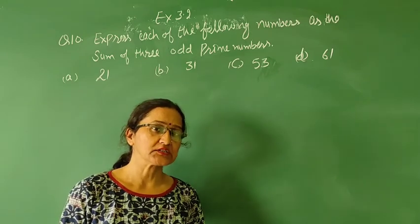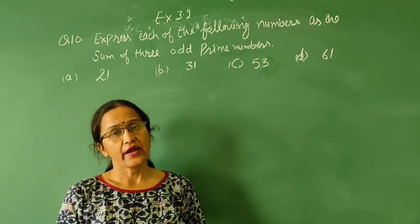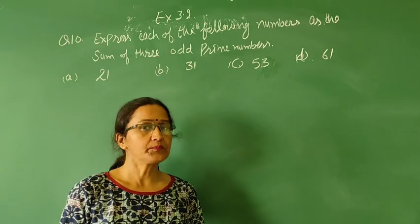As you know, what is a prime number? Those numbers which have only 2 factors, the number and 1. That is called a prime number.